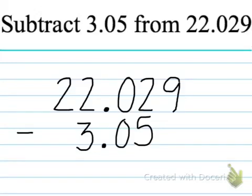In this video example, we are asked to subtract 3 and 5 hundredths from 22 and 29 thousandths. First thing you want to make sure you do is line up your place values very nicely and your decimal points.